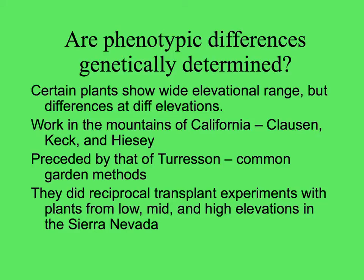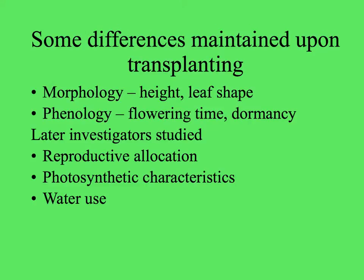A team of scientists working in the mountains of California, influenced by the work of Turesson — who brought different sizes and shapes of the same species to a common garden to see how much of their differences were environmentally determined — did reciprocal transplant experiments with plants from different elevations in the Sierra Nevada. These three scientists, Clausen, Keck, and Heisey, used the property of many plants that they're easy to clone or divide into different pieces. By planting these individuals at different places, they looked at differences in morphology, phenology, photosynthetic characteristics, and water use.